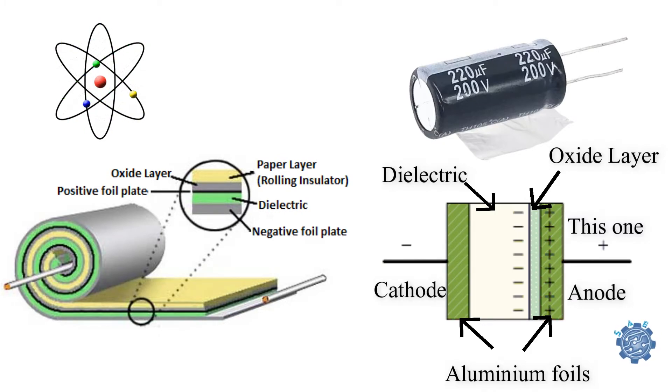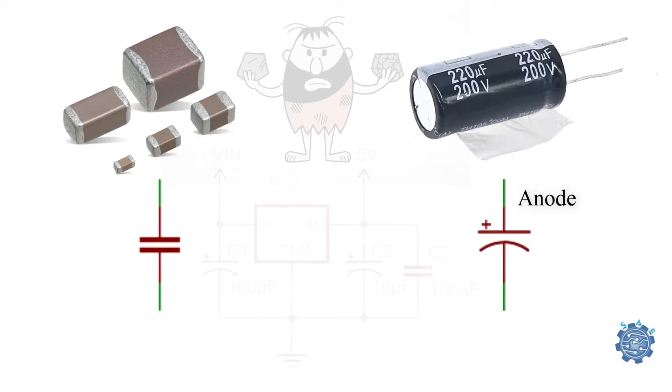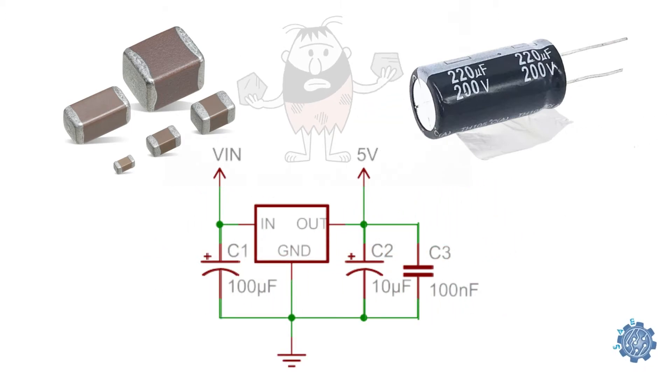Compared to ceramic capacitors, these capacitors need to be polarized, so the anode must be connected to the positive voltage and the cathode needs to be connected to the negative voltage.